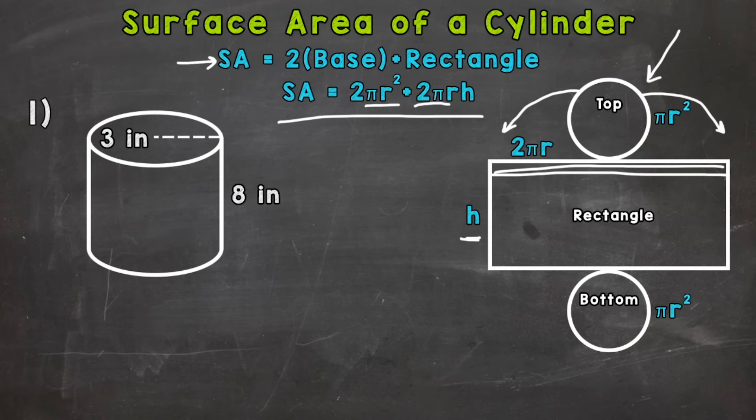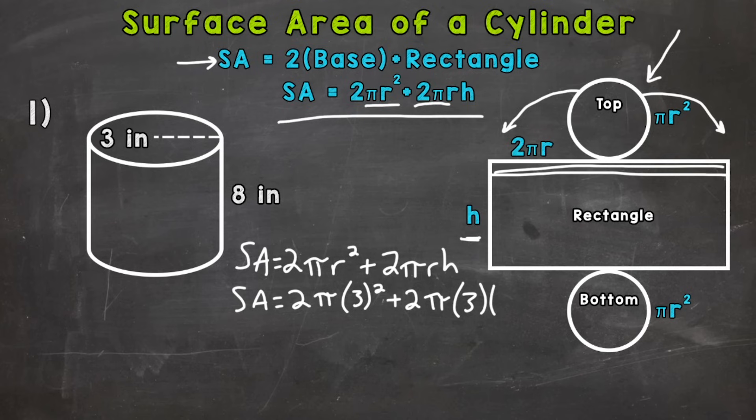So let's plug in all the information we have, solve, and get the correct surface area here. So we will start by rewriting our formula. Surface area equals 2πr² + 2πrh. So now we plug in, so 2π, the radius is 3 squared plus 2π, radius is 3 of our base again, times the height of 8.